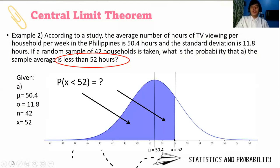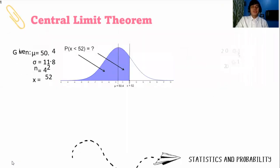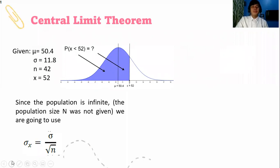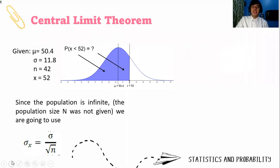Our probability notation is the probability of x̄ is less than 52. To answer that, let us compute for σ sub x̄ when the population is infinite. The formula is σ over the square root of n. It's very simple.